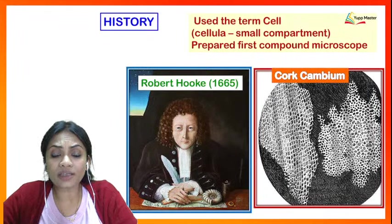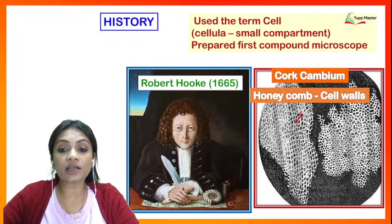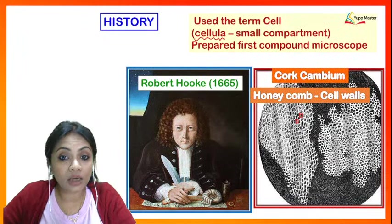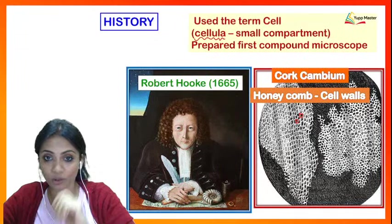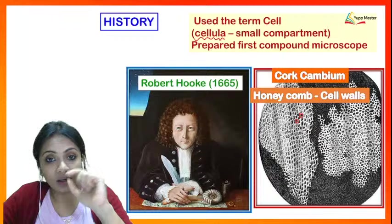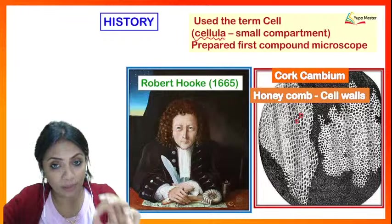He called it cork cambium, where it gave a honeycomb-like appearance. Those small compartments seen are nothing but cell walls. Because it gave a compartment-like appearance, he used the name 'cellula' to describe it, since 'cellula' basically means small compartment. That is why the word 'cell' came into existence. Robert Hooke prepared the first compound microscope and was the first to use the term 'cell.'